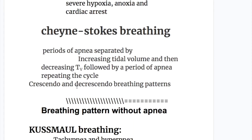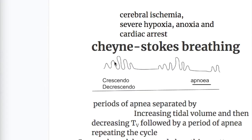The next abnormal breathing pattern with apnea is Cheyne-Stokes breathing, in which there are periods of apnea separated by a crescendo and decrescendo type of breathing pattern. In the crescendo phase, tidal volume increases, then tidal volume decreases in the decrescendo phase, followed by apnea, and the cycle repeats.